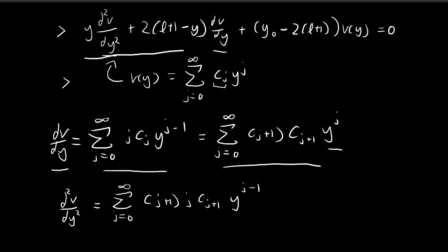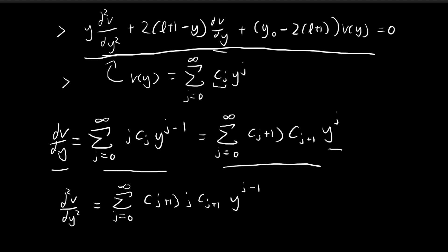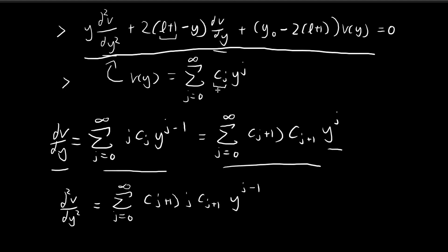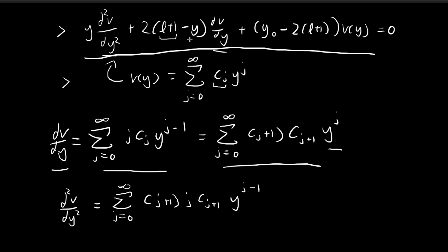Now we are ready to substitute everything into the differential equation. The term y·d²v/dy² gives the sum from j=0 to infinity of (j+1)·j·c_{j+1}·y^j. For the 2(l+1) part of the next term, we get plus 2(l+1) times the sum of (j+1)·c_{j+1}·y^j. For the minus y factor multiplying dv/dy, we use the original form of the first derivative; the extra y produces y^j, giving minus 2 times the sum of j·c_j·y^j.